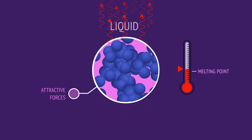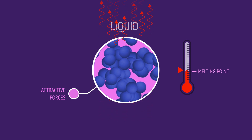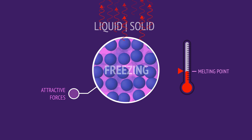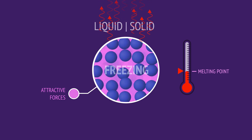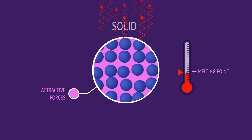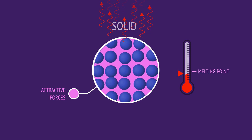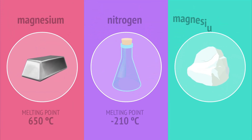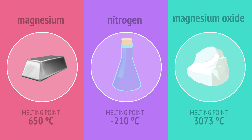And that removing heat energy reduces the kinetic energy, allowing the attractive forces to act and the change of state is reversed. We've also seen how the different melting and boiling points of substances are due to the different attractive forces between particles.